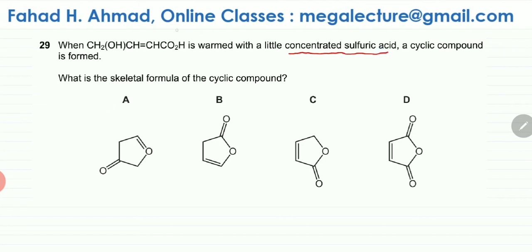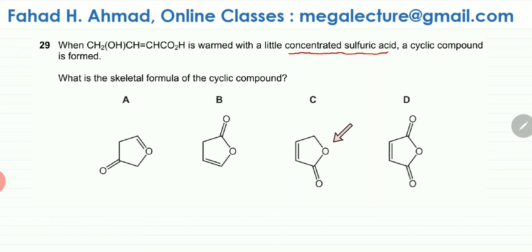If you focus on the functional groups of this molecule, it's not reacting with anything else. There are only two possibilities. What does concentrated sulfuric acid do? It either dehydrates to form an alkene, or it is used to form esters. A cyclic compound is being formed, and you can see there are ester links. An ester link is a C double bond O attached next to a carbon chain on both sides. So we're assuming it's going to form an ester.